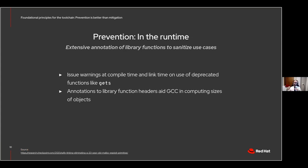Prevention in the runtime: the thing I want to highlight is annotations to library function headers. As GCC's warning framework improved, it became apparent that we wanted to annotate headers in C and C++ with additional aids to allow GCC to compute sizes of objects and know something about the parameters of those functions. We now have access annotations in GLibC that allow you to say, for example, this parameter is read-only or this parameter is write-only. We've begun marking up the runtimes with access information, which allows the compiler to do a better job when compiling your code.